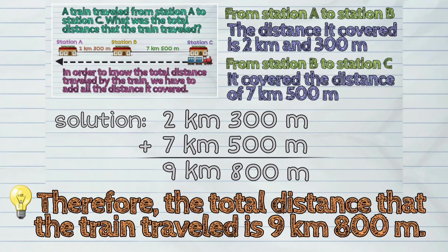Therefore, the total distance that the train traveled is 9 kilometers and 800 meters.